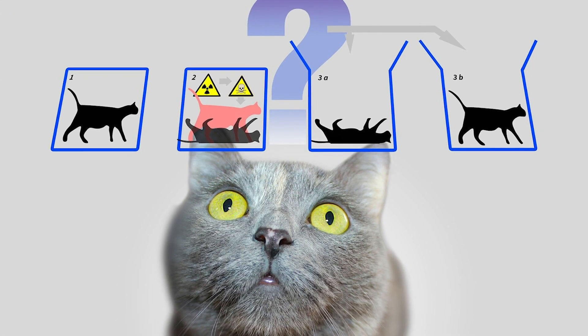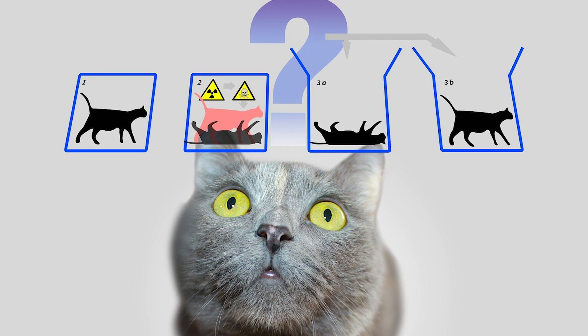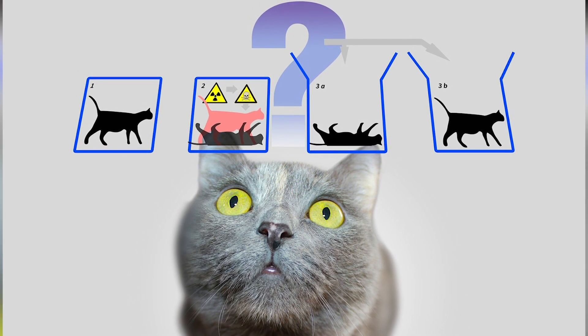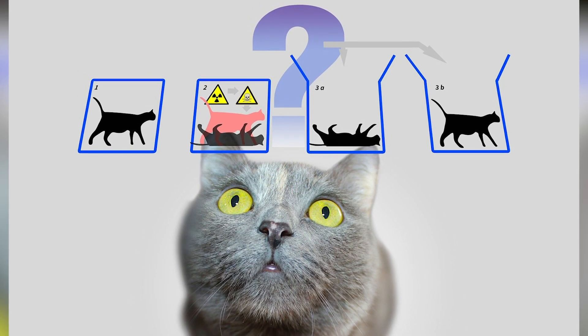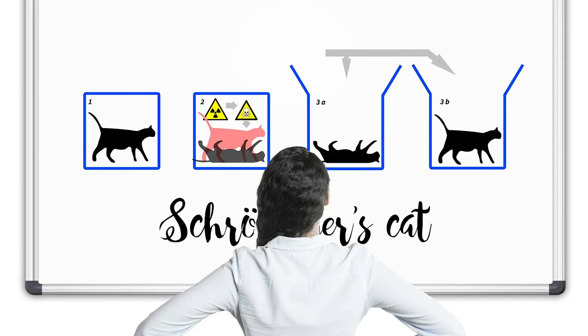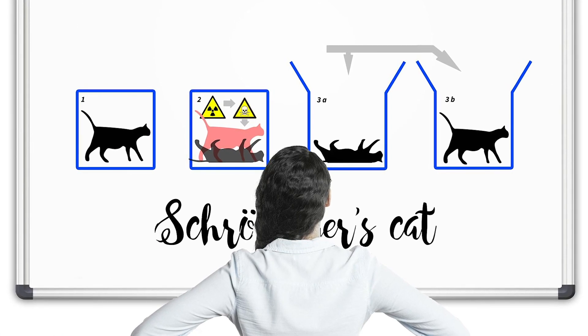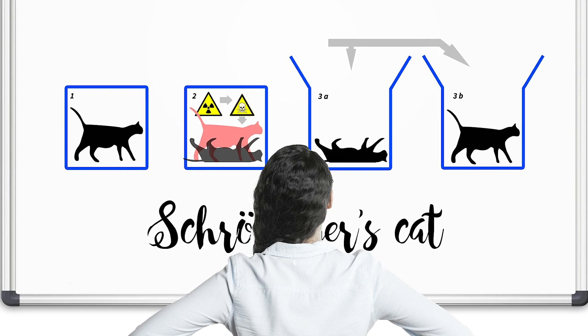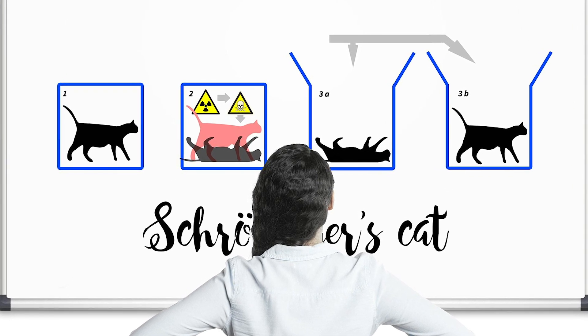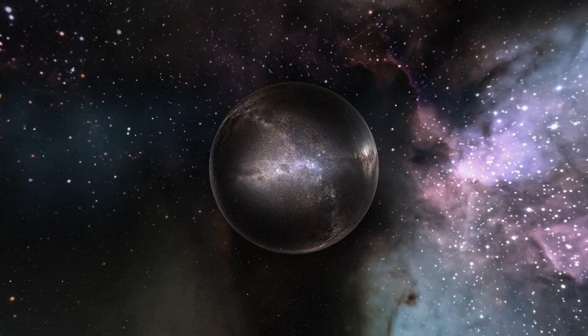There is a box. It is soundproof and opaque, preventing anyone from observing what's going on inside. In that box is a deadly poison that will only be released if one atom of radioactive substance decays, of which there is a 50-50 chance. Also in the box is a cat.